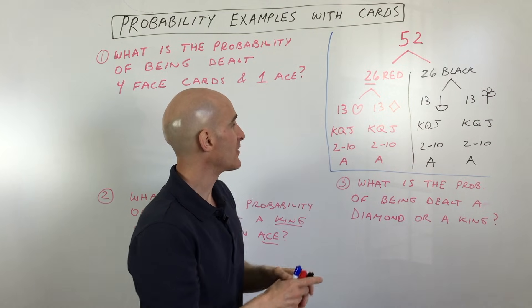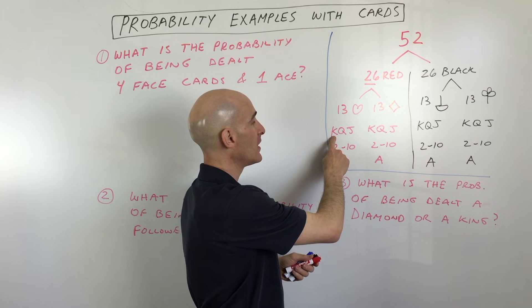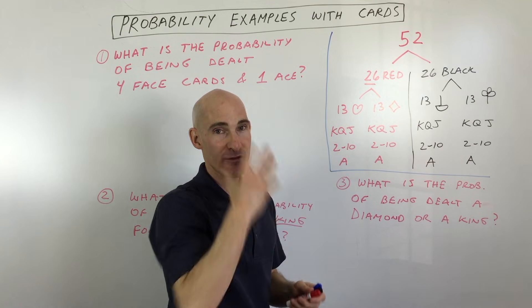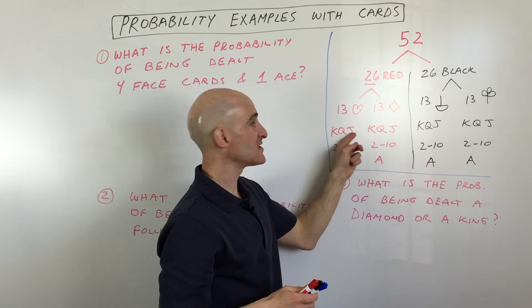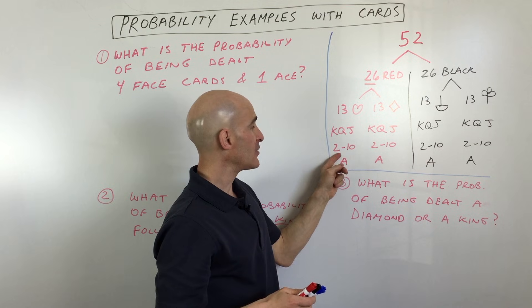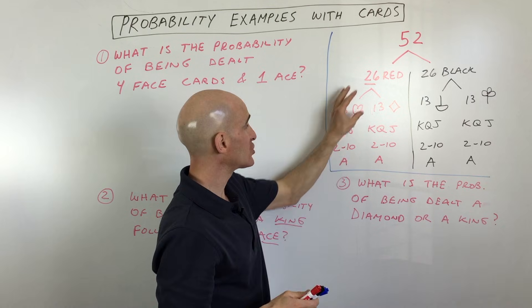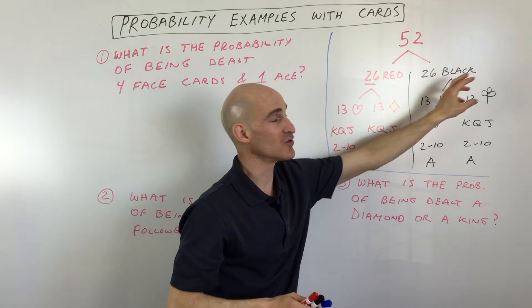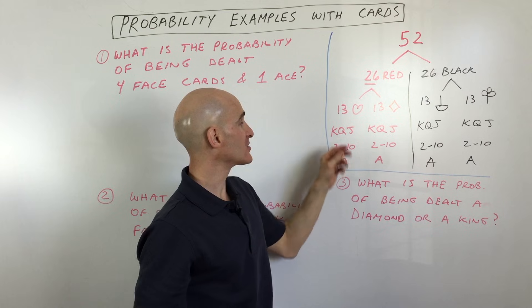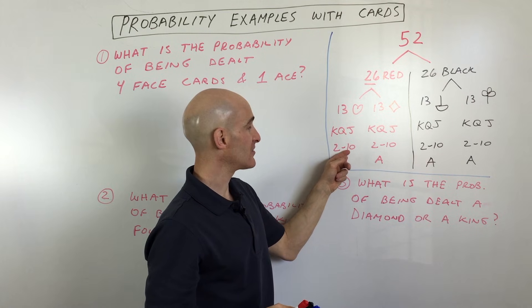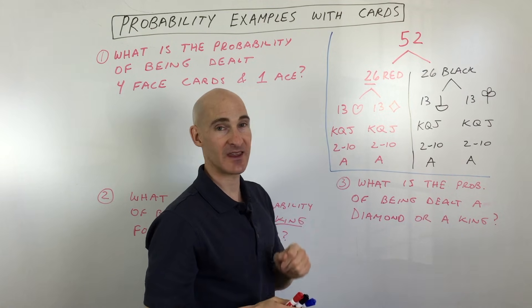But then you can further divide those 13 hearts into three face cards, so they have a face on them. They're kings, queens, and jacks. And then you've got the numbered cards, which are 2 through 10, and then there's one ace. So each suit, they call these four suits of 13 cards, are made up of three face cards, the numbered cards 2 through 10, and then the ace.